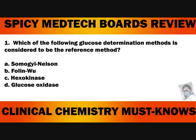Number 1. Which of the following glucose determination methods is considered to be the reference method? A. Somogyi-Nelson. B. Folin-Wu. C. Hexokinase. D. Glucose Oxidase.